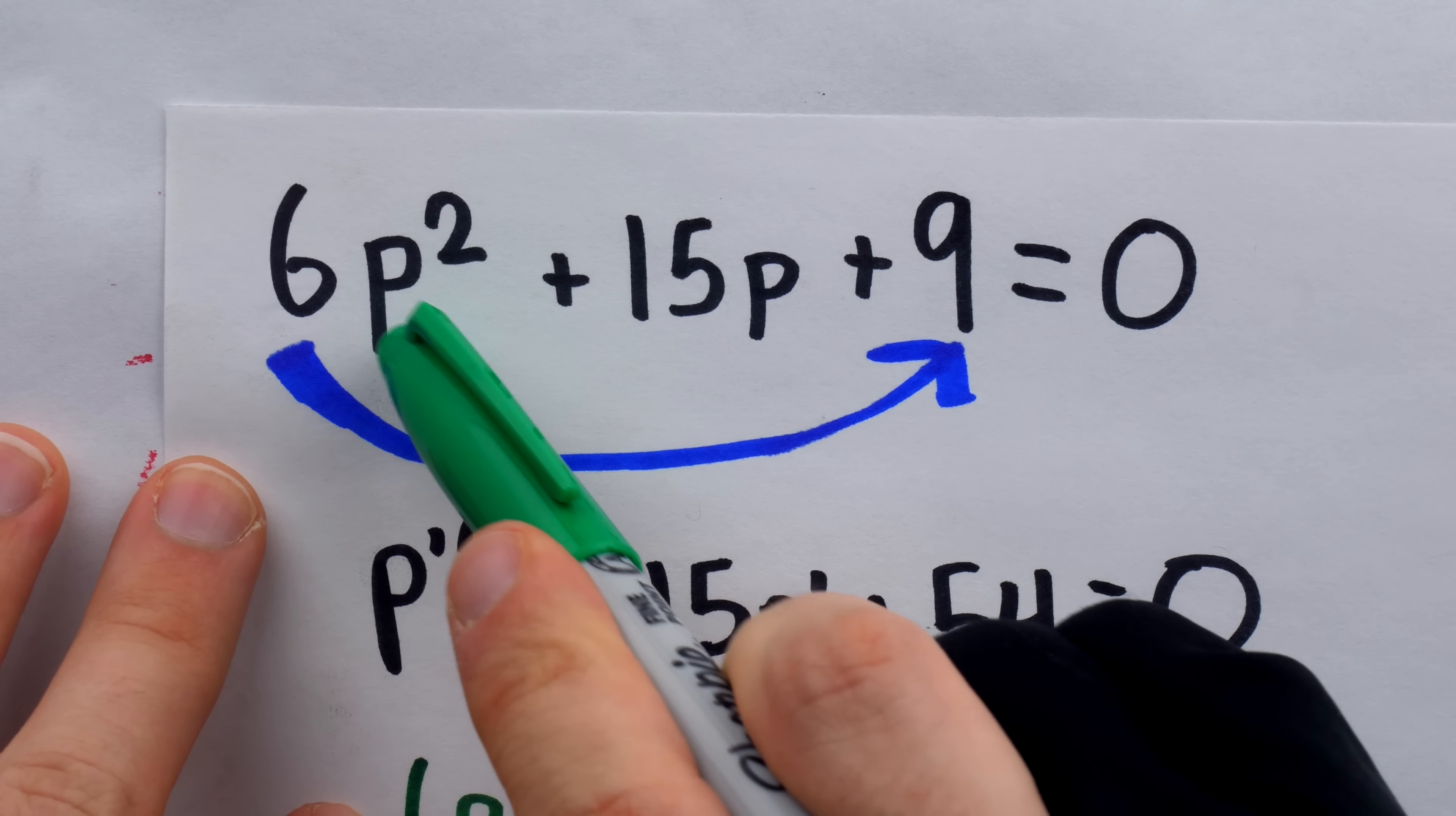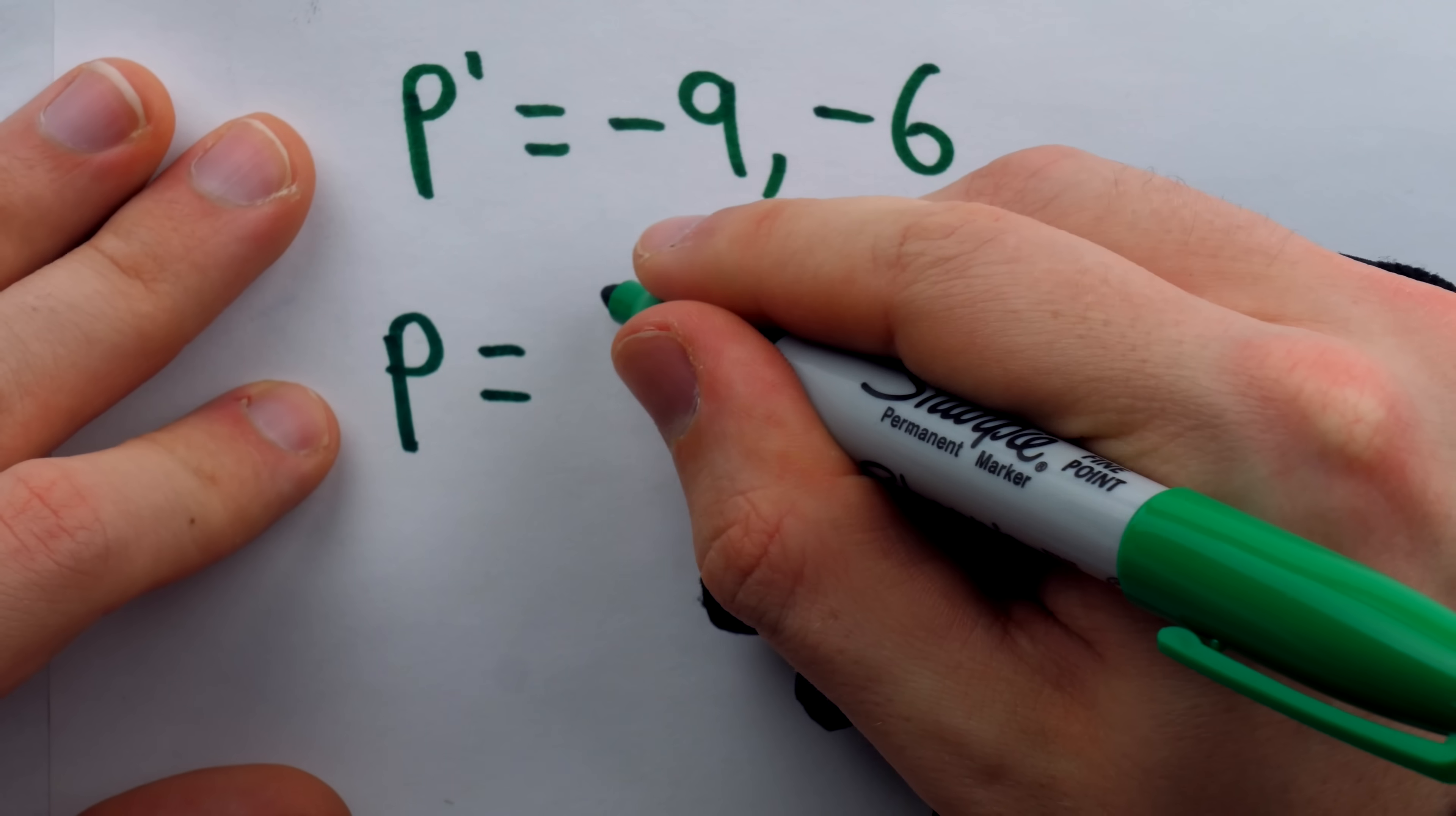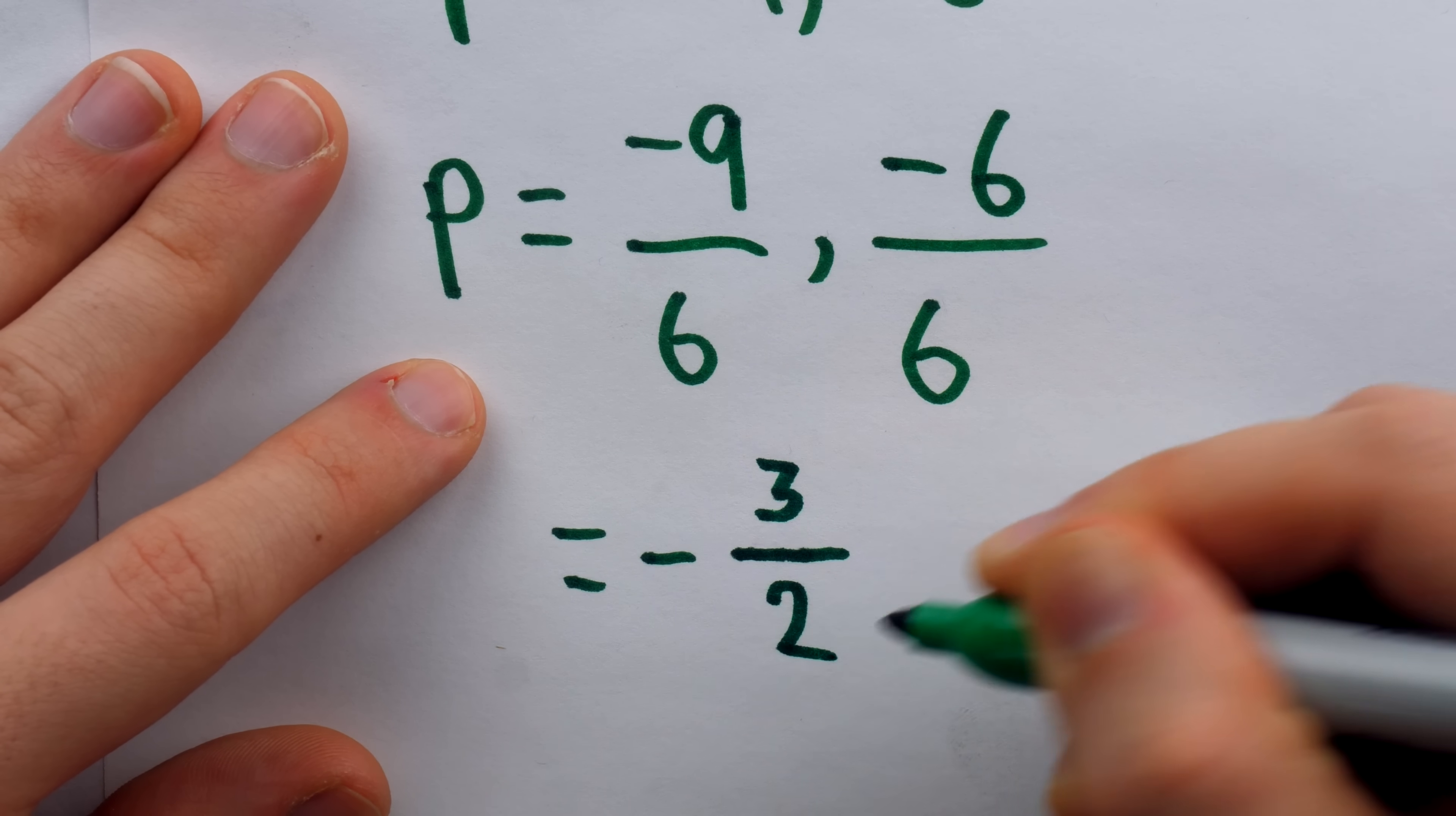Then to get the values of p that we actually want, just take the values of p prime and divide by that original leading coefficient that we previously multiplied by. So what are our values for p? Well, it's going to be negative 9 divided by 6, and negative 6 divided by 6. Negative 9 divided by 6 reduces to negative 3 over 2, and negative 6 over 6 is negative 1.